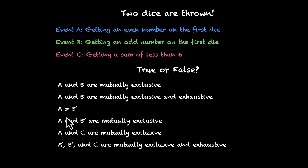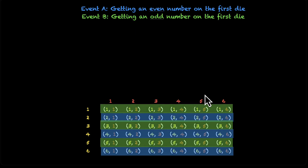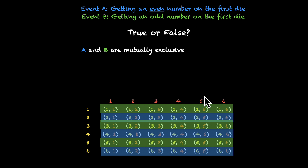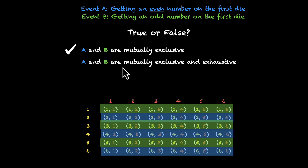Let's look at the first four statements, which only involve A and B. Statement 1: A and B are mutually exclusive — mutually exclusive means no overlap. Are there sample points that are both green and blue? No — every point is either blue or green, so yes, they are mutually exclusive. Statement 2: A and B are mutually exclusive and exhaustive. Together, do they cover the entire sample space? Yes — nothing is left out. So they are mutually exclusive and exhaustive.